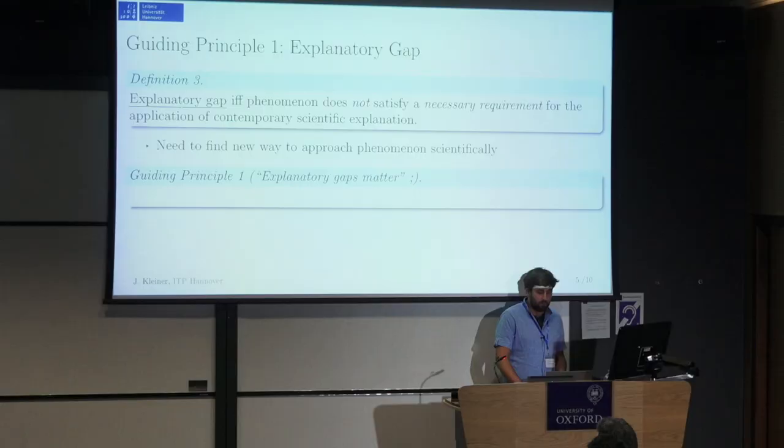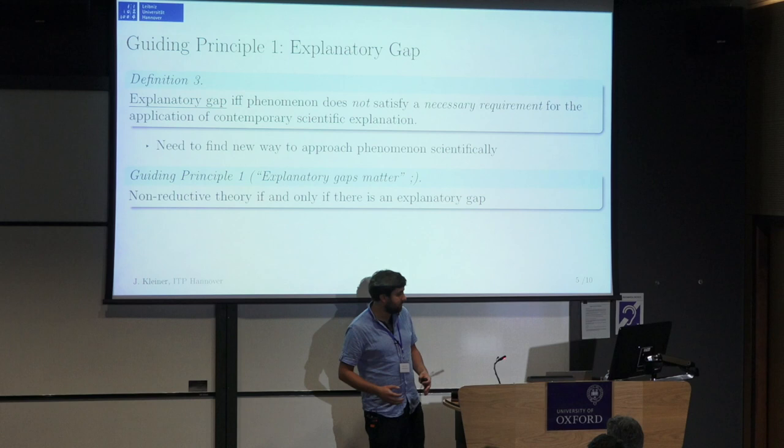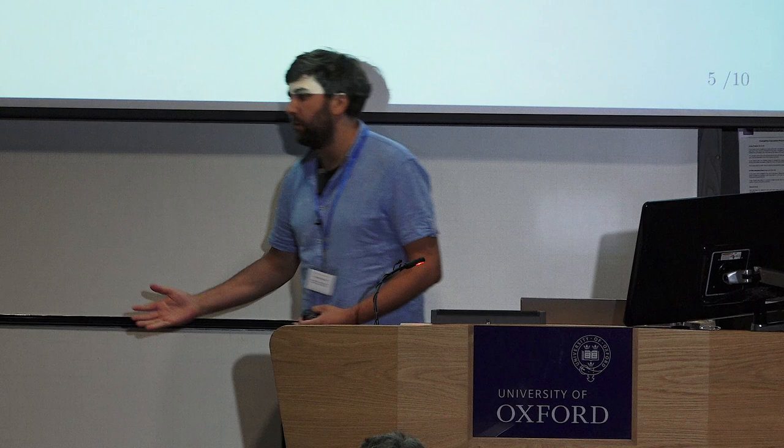The guiding principle, which you could entitle 'explanatory gaps matter,' is the following: non-reductive theories if and only if there's an explanatory gap. Applied to aspects of experience: if there's an aspect of experience that exhibits an explanatory gap, then it would be a good idea to look for non-reductive theories, like IIT — IIT is a non-reductive theory. On the other hand, if there's an aspect of experience which does not exhibit an explanatory gap, then we can explain that in terms of reductive theory, tying it down to the brain dynamics or a more physical description.